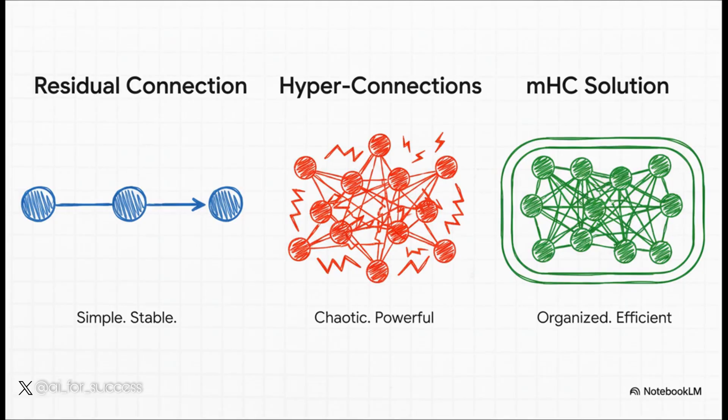This one image right here tells you the entire story. On the left, you've got the classic residual connection — it's simple, it's stable, and it's what powered AI for a decade. Then in the middle came this powerful upgrade, Hyperconnections, but it had a critical hidden flaw. And on the right, that's the elegant solution from this paper: a new design that's organized, efficient, and just as powerful.